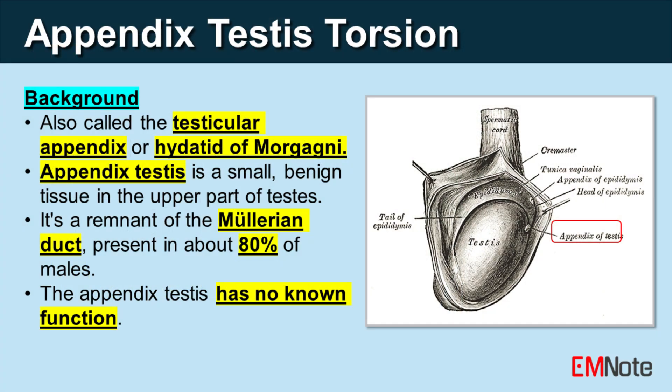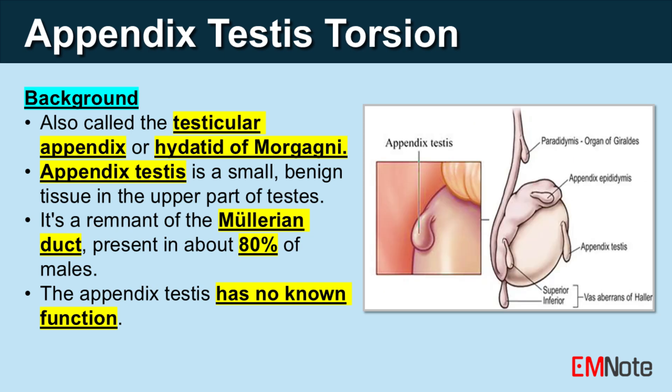The appendix testis, also referred to as the testicular appendix or hydatid of Morgagni, is a small, benign piece of tissue found in the upper part of the testis.